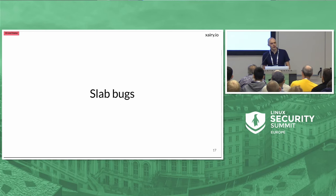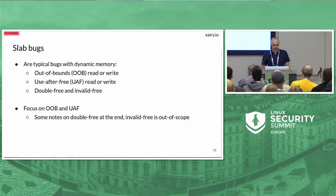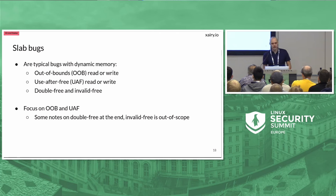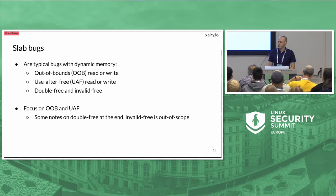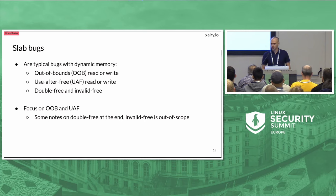Let's talk about what kinds of memory corruptions we might have with the slab allocator. These are the typical bugs you might have with any dynamic memory allocator: out-of-bounds accesses, use-after-free accesses, memory being freed twice, invalid pointers being freed, and so on. Within this talk we're going to focus on out-of-bounds and use-after-free bugs, just because there isn't enough time to cover everything. I do have some notes about double-frees at the end, and invalid frees we're just not going to discuss.